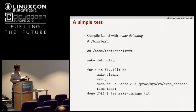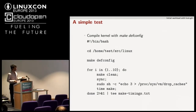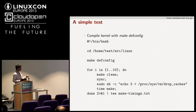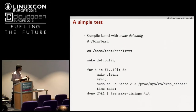A simple workload I tested was a kernel compilation — make defconfig — run in 10 iterations in a loop, cleaned each time, with data flushed and dropped from page caches so that the compilation timing is consistent.